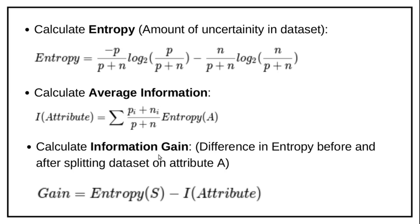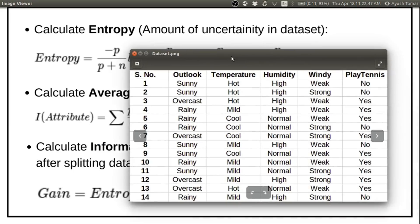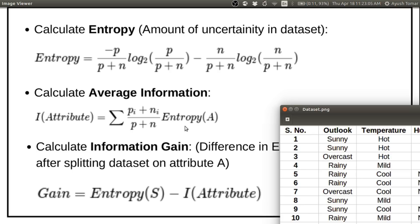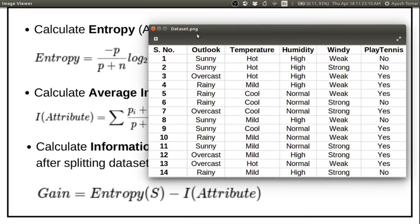Next comes information gain. Information gain is the difference in entropy before and after splitting the dataset on attribute A. Initially, we calculate the entropy for the entire dataset. Next, we calculate the entropy for each particular attribute — outlook, temperature, humidity, windy — and then we sum these up. This is known as average information, and we subtract this average information from the entropy of the entire dataset. That is known as information gain.